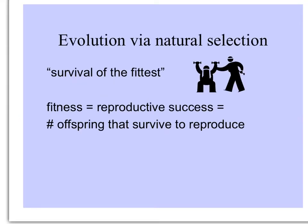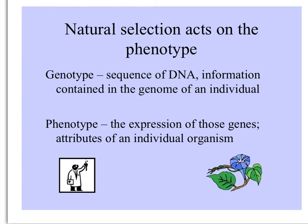Evolution happens by natural selection, the process sometimes called survival of the fittest, where fitness is equal to reproductive success — the number of offspring of an individual that survived to reproduce. Natural selection acts on the phenotype, the expression of the genes, the attributes that an individual organism has, not on the genotype itself.